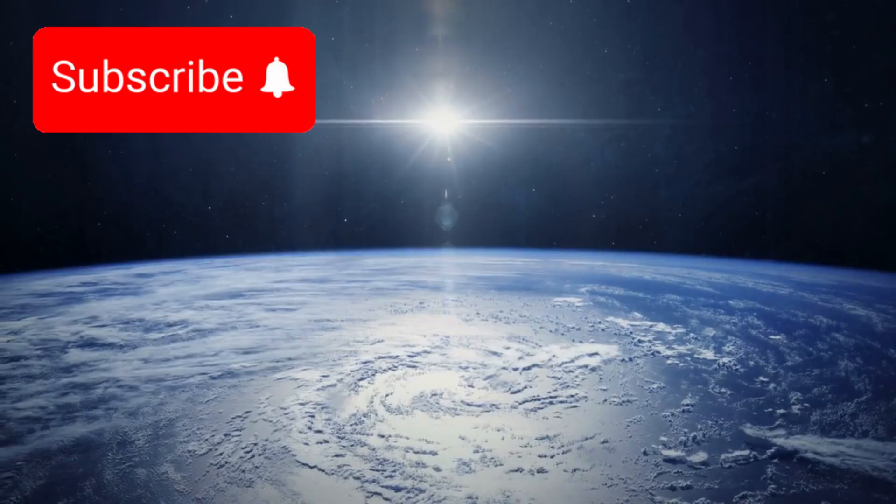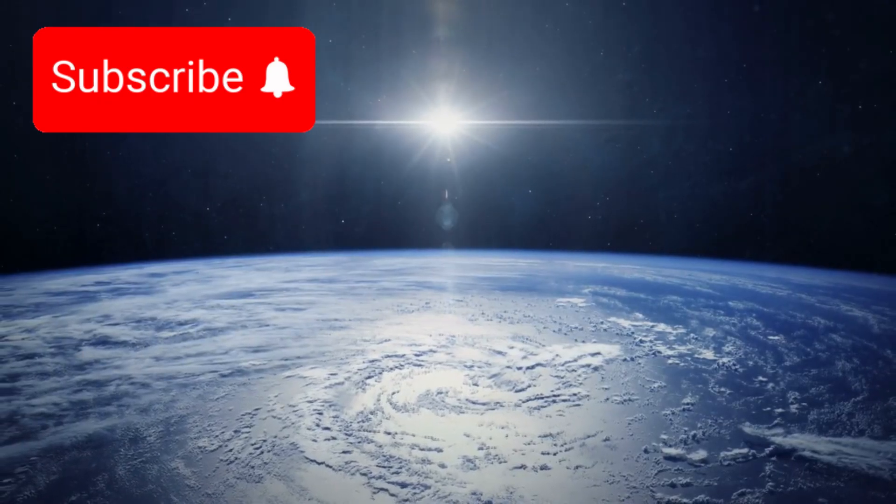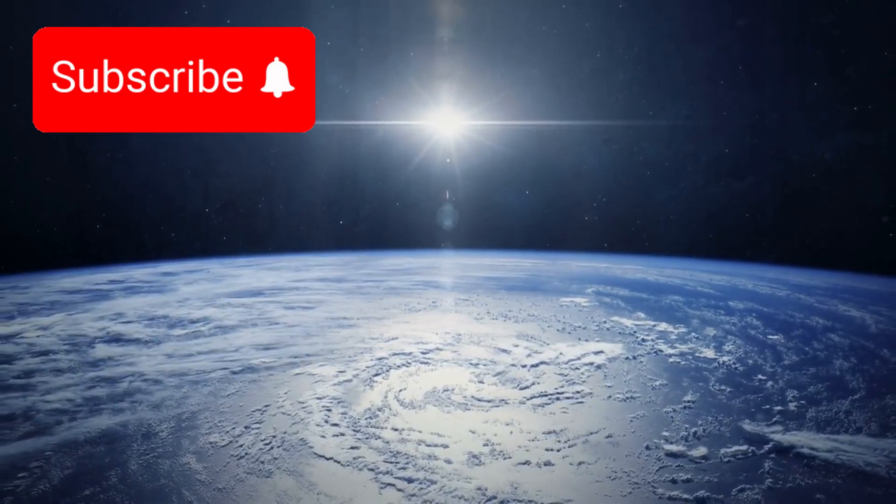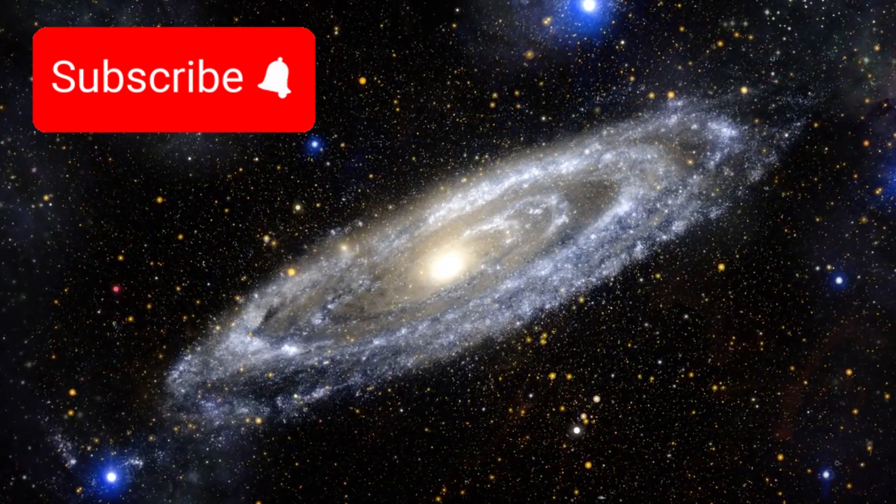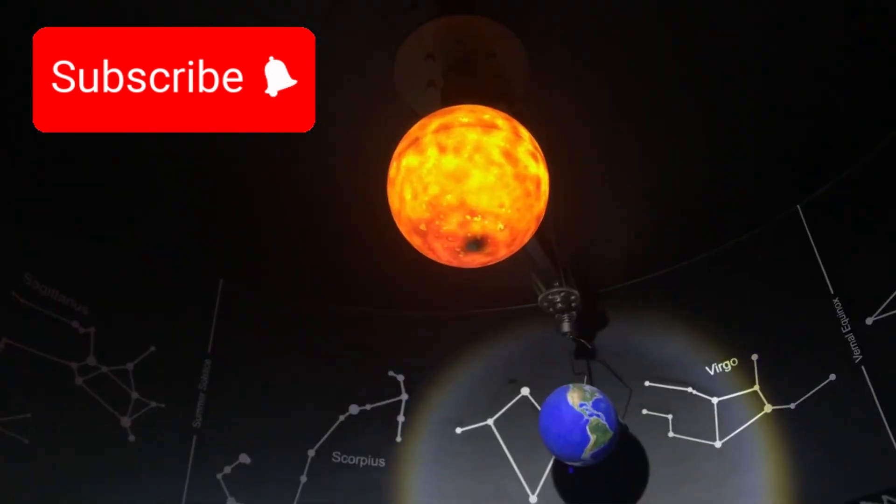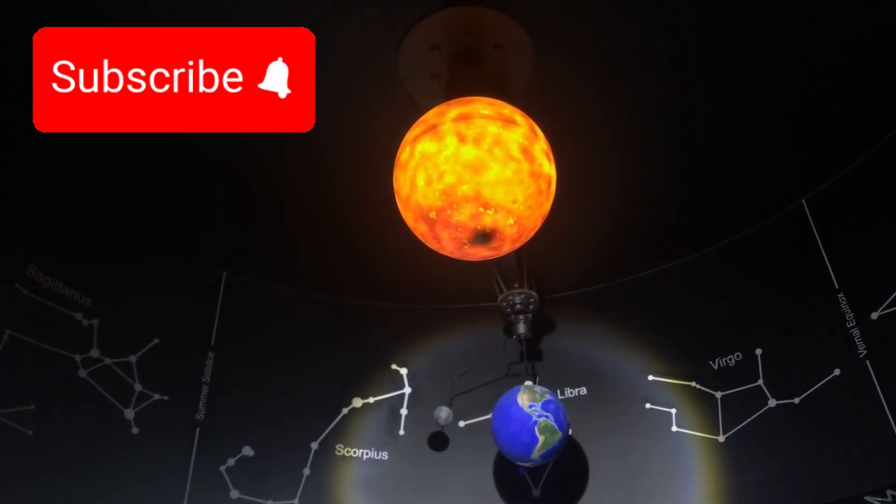Yet Kepler 452b lies over 1400 light-years away. A distance so vast that even at the speed of light, the journey would take generations. It is unreachable, for now, but not unknowable.